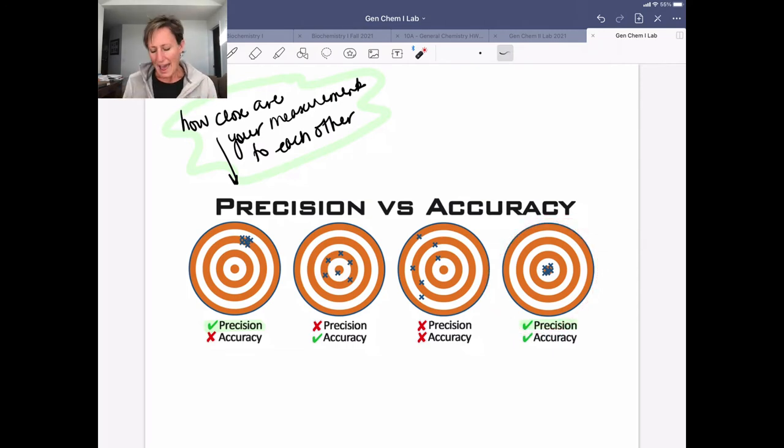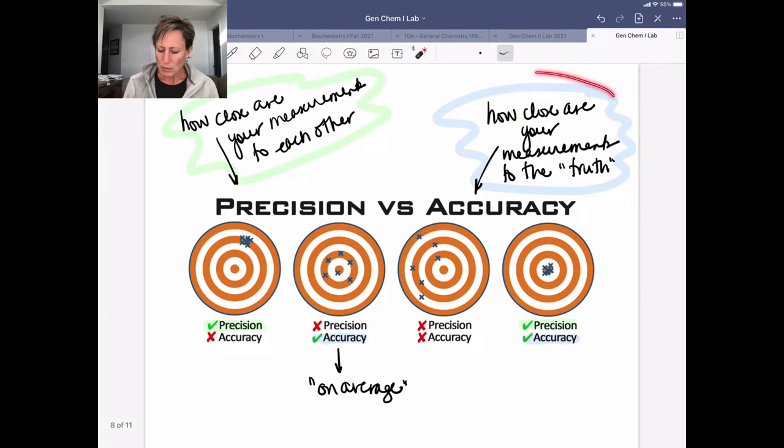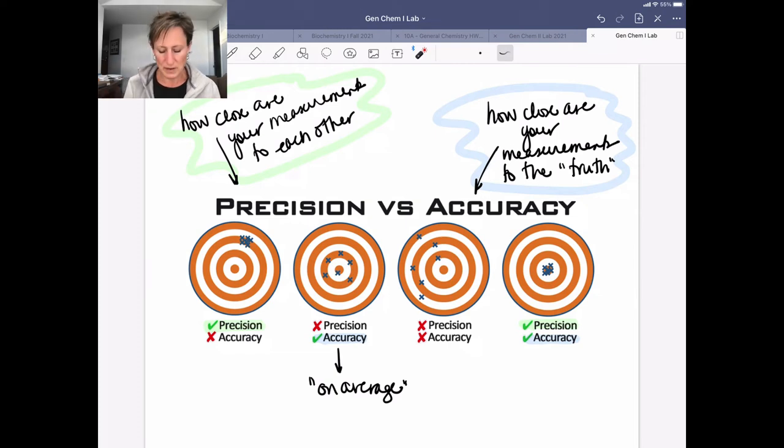When we think about accuracy, though, accuracy represents how close your measurements are to the truth, what the answer is supposed to be. So again, with this first scenario, we can see that those data points were fairly precise, right? They were close to each other, but they weren't accurate and accuracy in this case representing the bullseye.